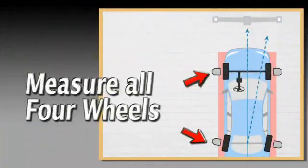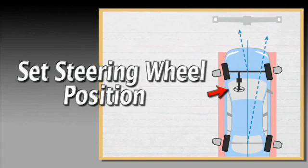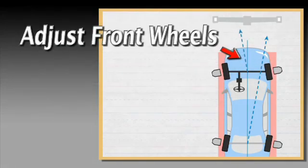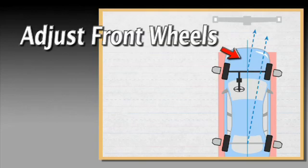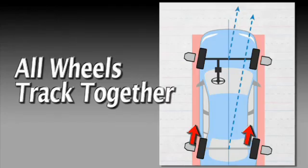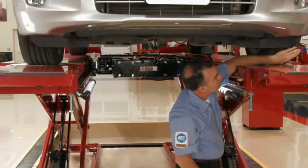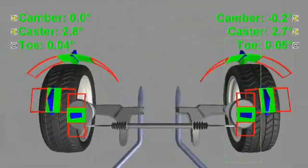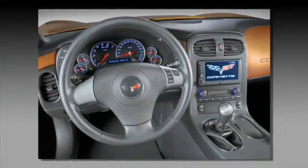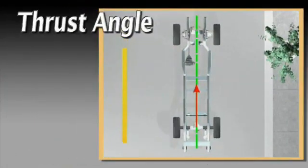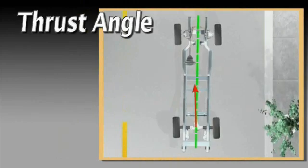If rear toe is not adjustable, perform a thrust line alignment. This will help guarantee all four wheels track together, minimize tire scuffing, provide correct front wheel alignment, and accurate center steering.